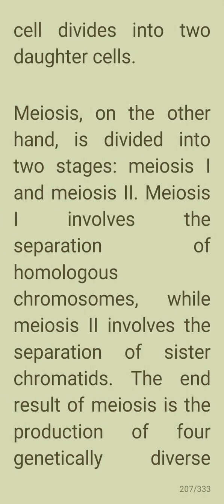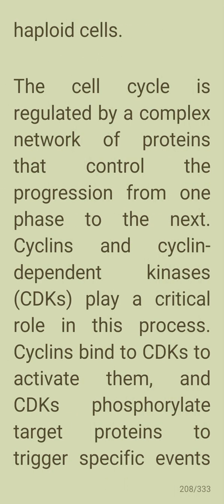In telophase, the nuclear membrane reforms around the two sets of chromosomes and the cell divides into two daughter cells. Meiosis is divided into two phases: meiosis one, which involves the separation of homologous chromosomes, and meiosis two, which involves separation of sister chromatids. The end result is the production of four genetically diverse haploid cells. The cell cycle is regulated by a complex network of proteins that control the progression from one phase to the next.